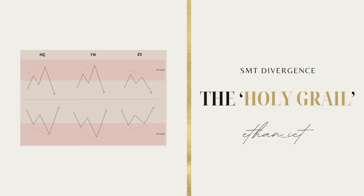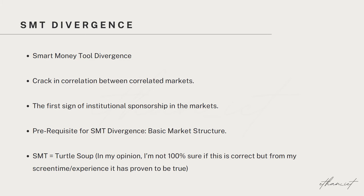If there was one concept from ICT that I would label the quote-unquote holy grail, it would be SMT Divergence. So what is SMT Divergence? SMT Divergence is the acronym for Smart Money Tool, so the long form of SMT Divergence is Smart Money Tool Divergence. You may hear others say that SMT Divergence is a crack in correlation, and essentially what this means is that SMT Divergence is a price signature that occurs when correlated markets don't move in tandem with one another.